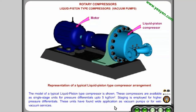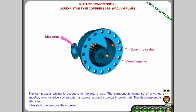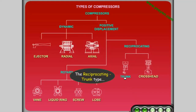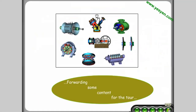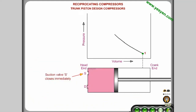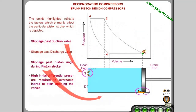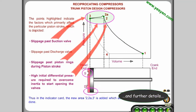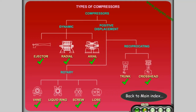Another compressor type is covered with further details, back to index. The reciprocating trunk type is also covered, with some content forwarded for the tour. Further details are available, back to index. All types are covered with detailed graphical explanation.